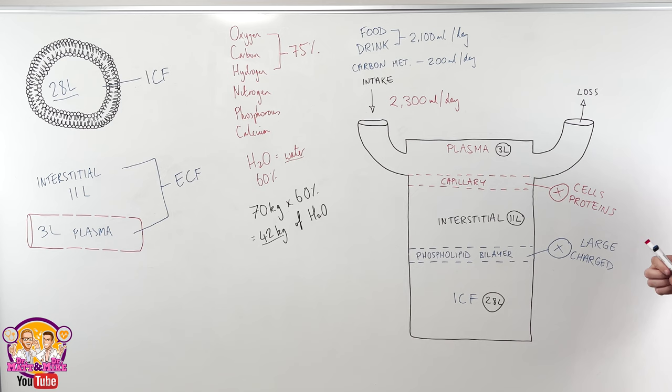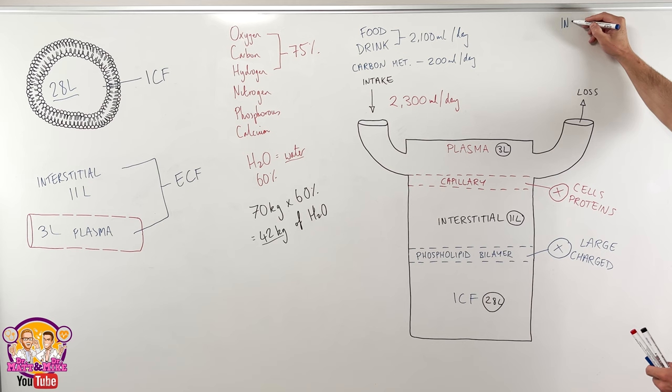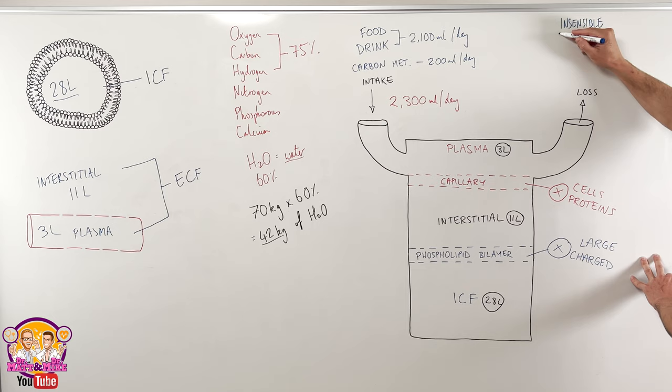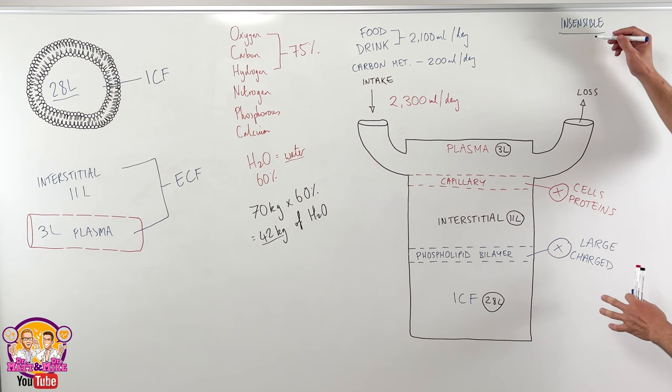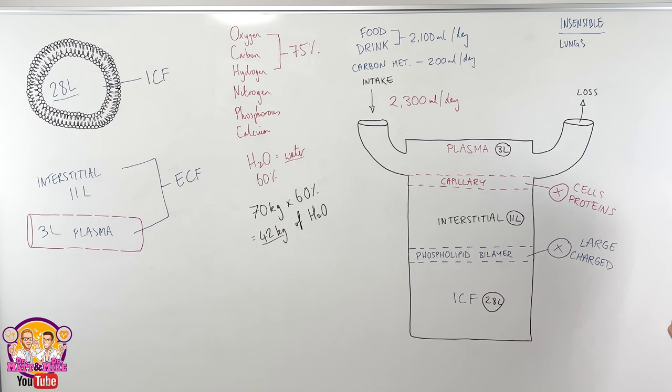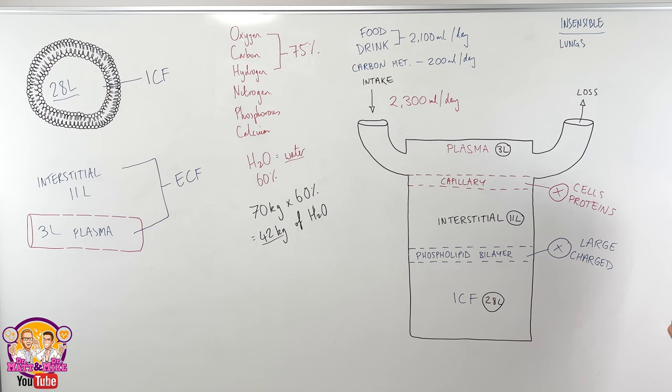Firstly, what are the different ways that we can lose fluid? Well, you can have something called insensible fluid loss. Now, insensible fluid loss occurs mainly from our lungs, so breathing and through our skin. Let's just write lungs down. Now, how much do we lose through our lungs through breathing? We lose around about 700 mils. 700 mils per day. Just from breathing.